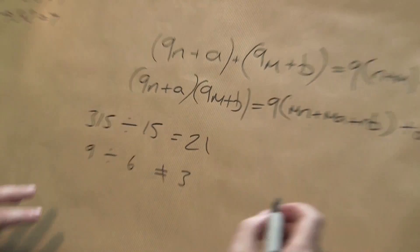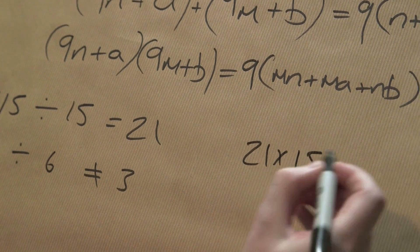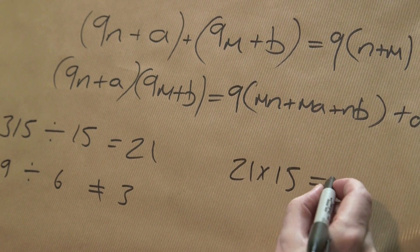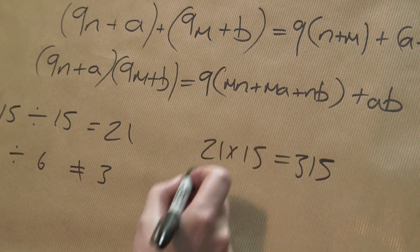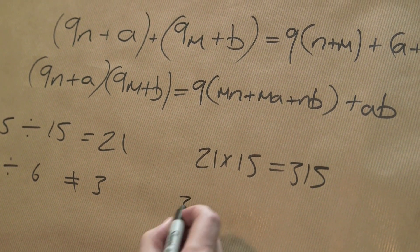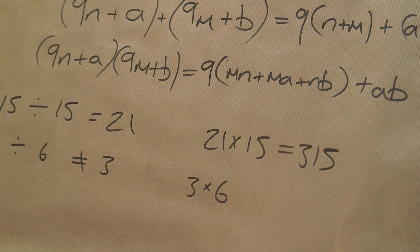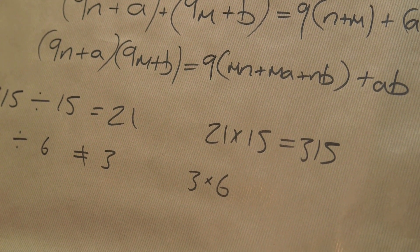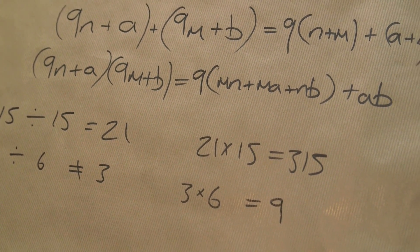So we'll just bring that 15 onto the other side, so we've got 21 times 15. Let's check that through. If we do that the other way — 21 times 15 — that's 315, and we should get the right answer. That's a 3 for the digital root, multiplied by 6, which gives me 18, which ends with a 9. That's exactly what I wanted.